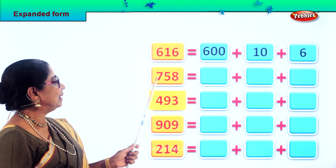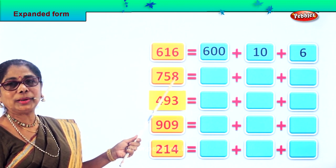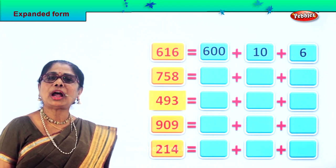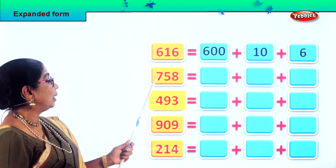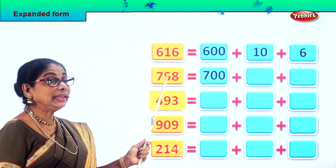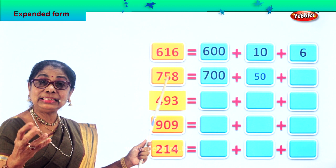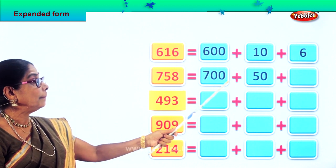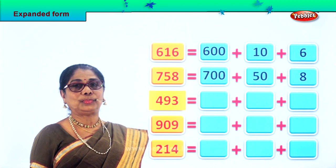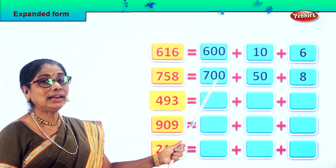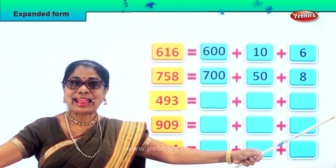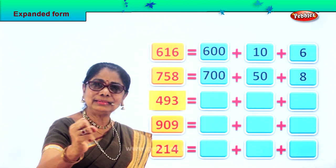Let's take the next one. In the ones place we have eight, tens place five, hundreds place seven. How many hundreds? Seven — that means seven hundred. How many tens? Five — that means fifty. Plus eight in the ones place. So seven hundred plus fifty plus eight makes up 758. We are expanding the number into its hundreds, tens, and ones place.